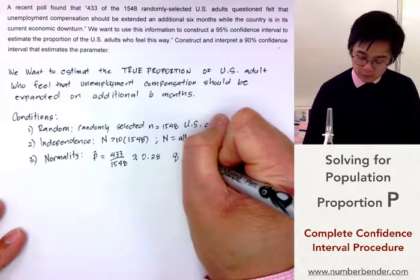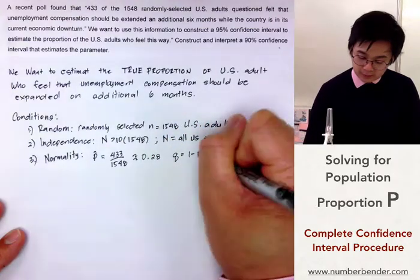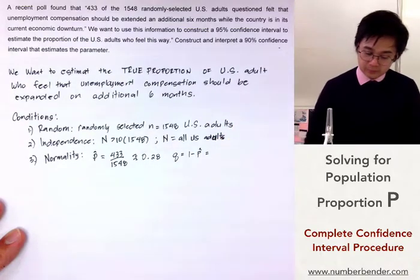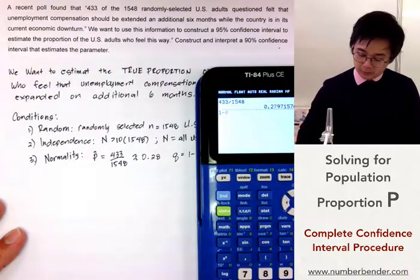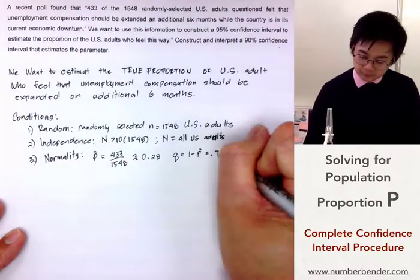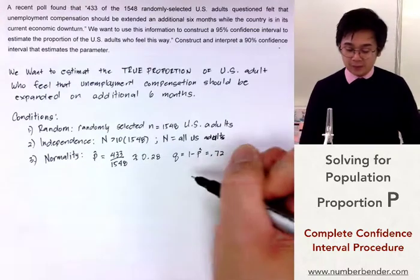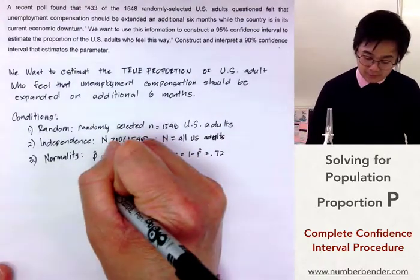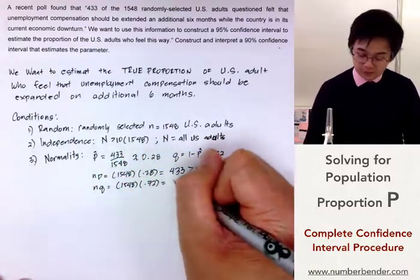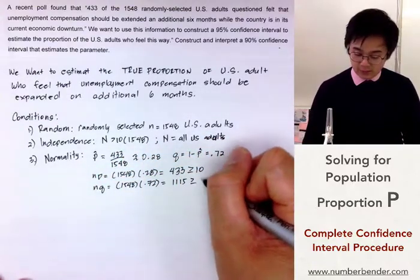And q, which is equal to 1 minus p-hat, is equal to 1 minus 0.28, which is 0.72. Now that we have p and q, we can verify that Np and Nq are both greater than 10. All three conditions are now satisfied.